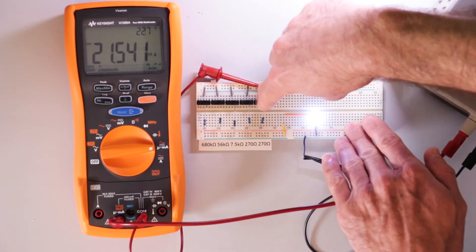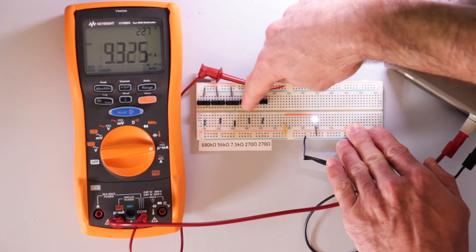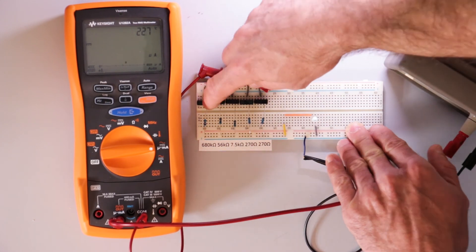So we can back these off individually. And you can see the LED get a little dimmer, dimmer, dimmer, and then off.